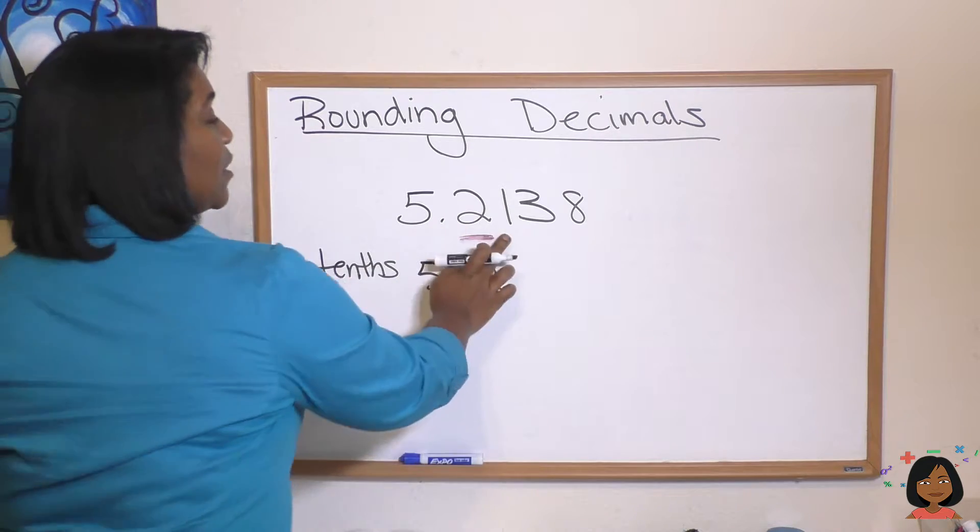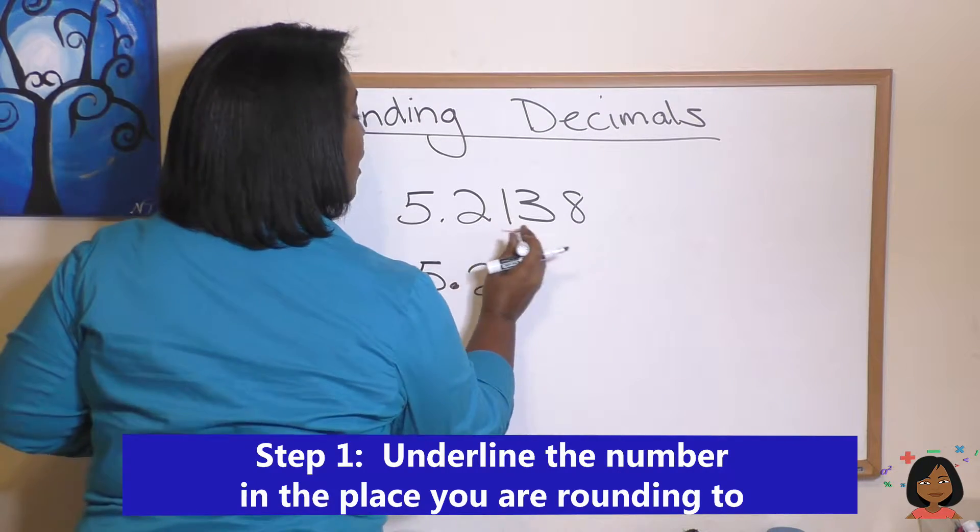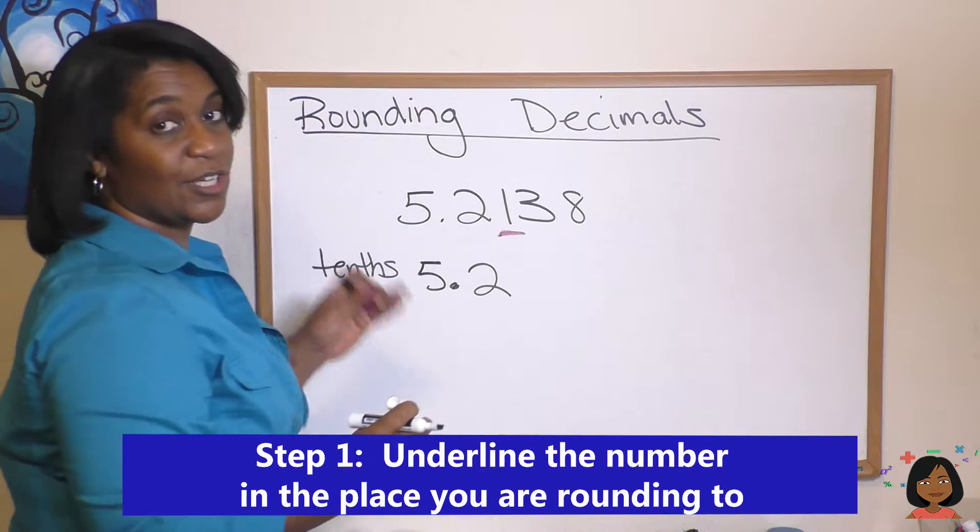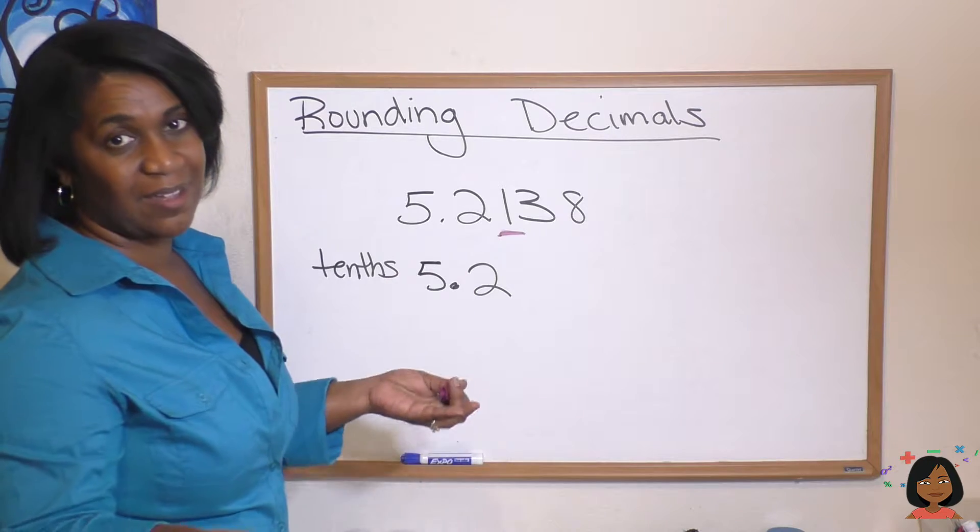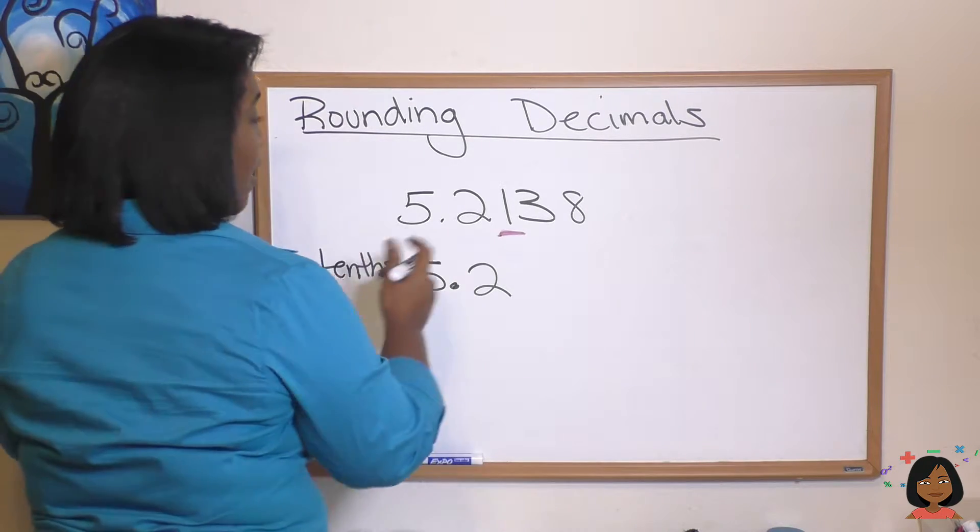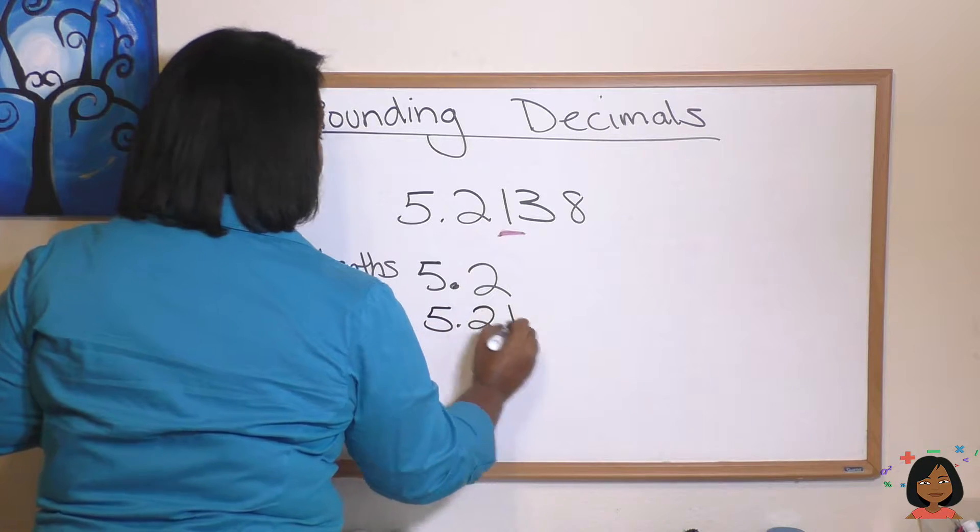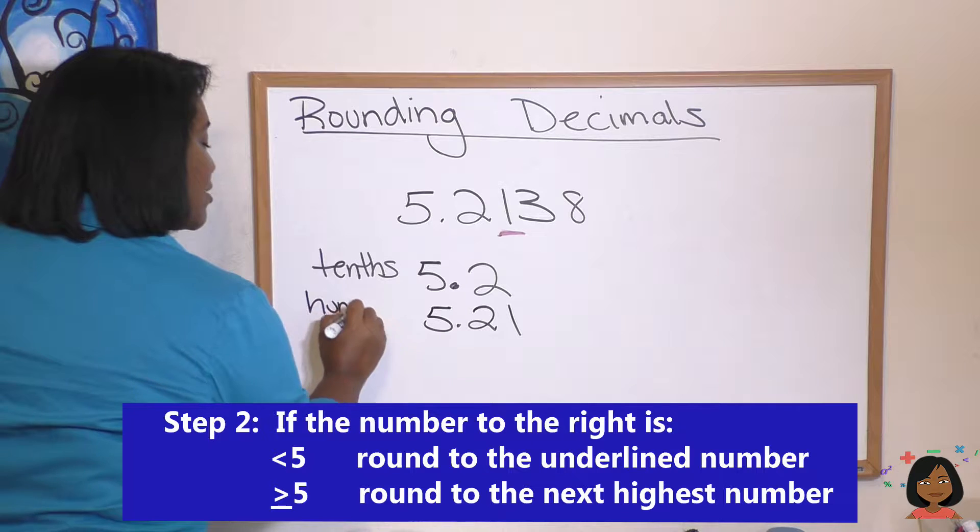Let's round this time to the hundredths place. Highlight the 1, look to the right, we see it's a 3. We know 3 is less than 5, so we're going to keep our 1 and we're going to round to the 5.21 and that's our hundredths place.